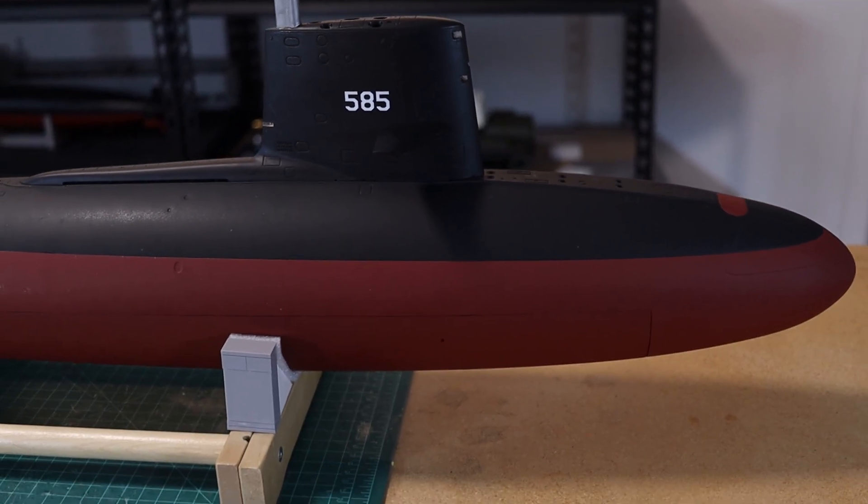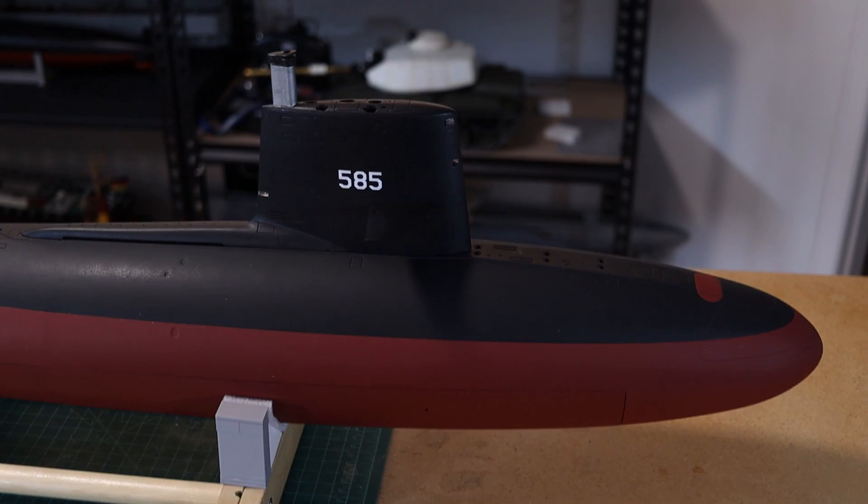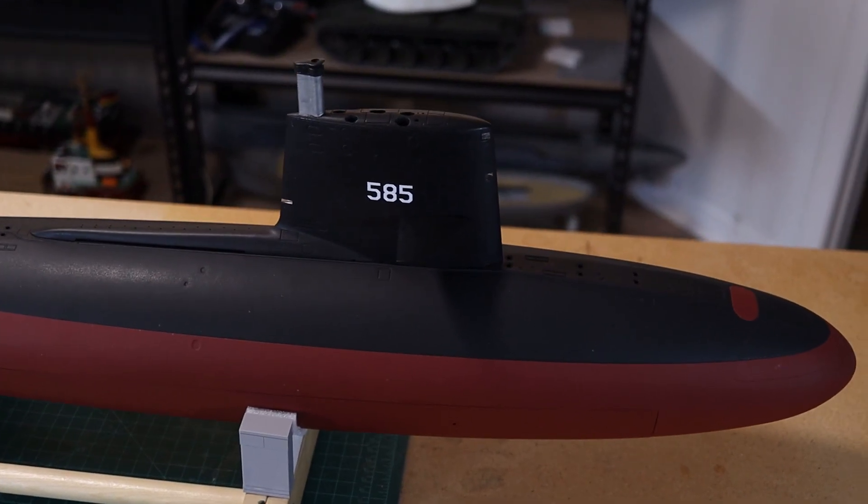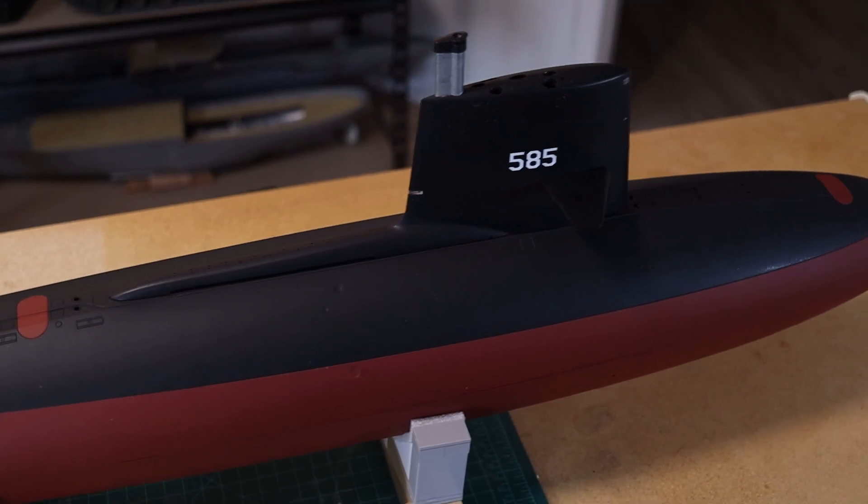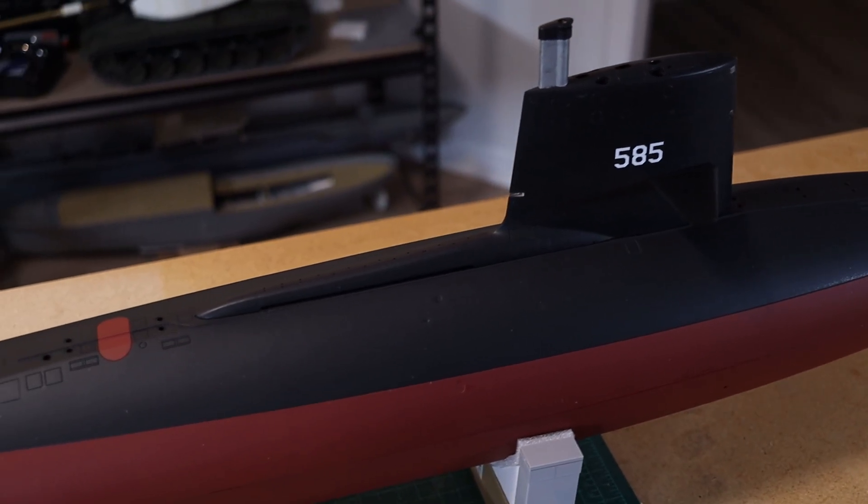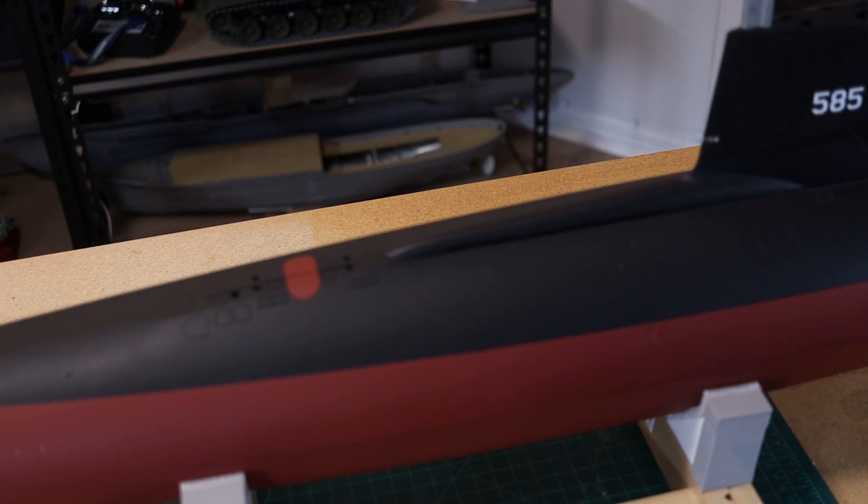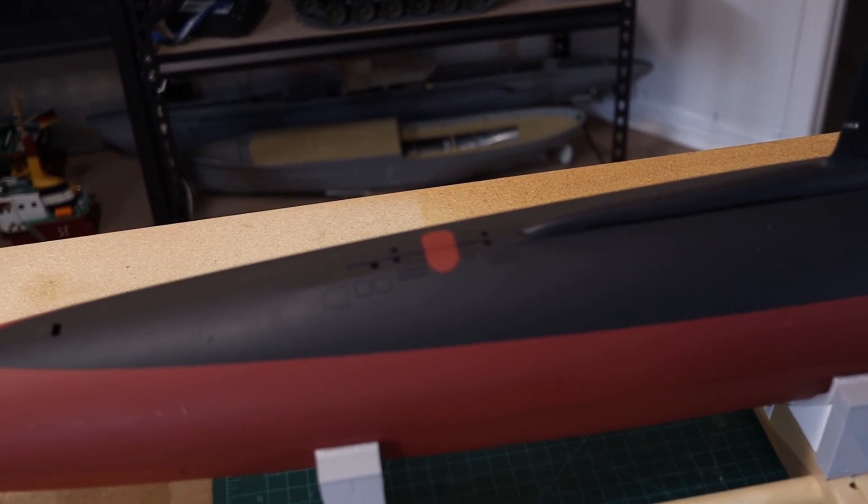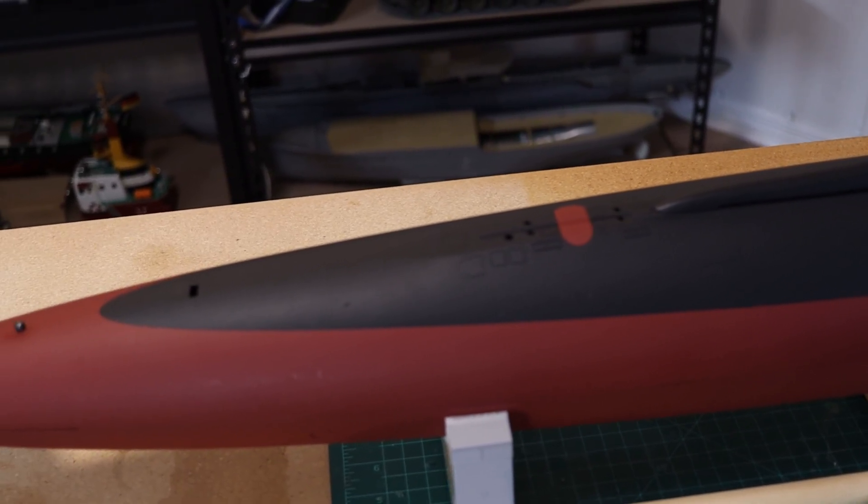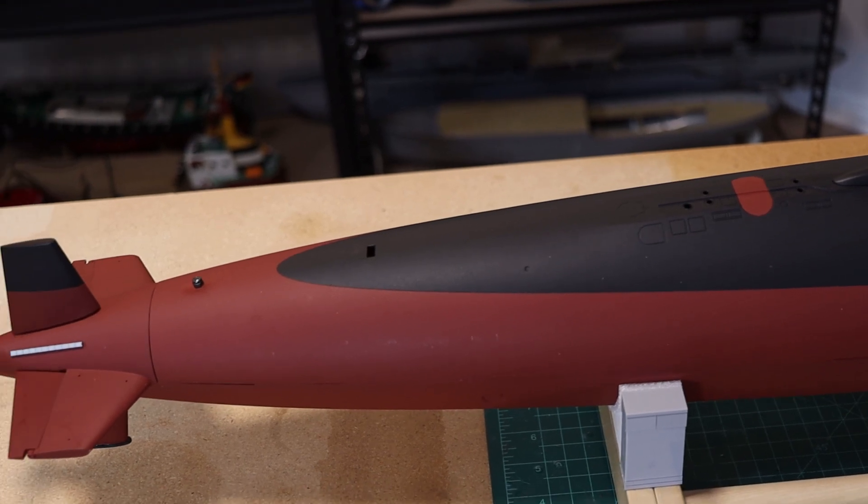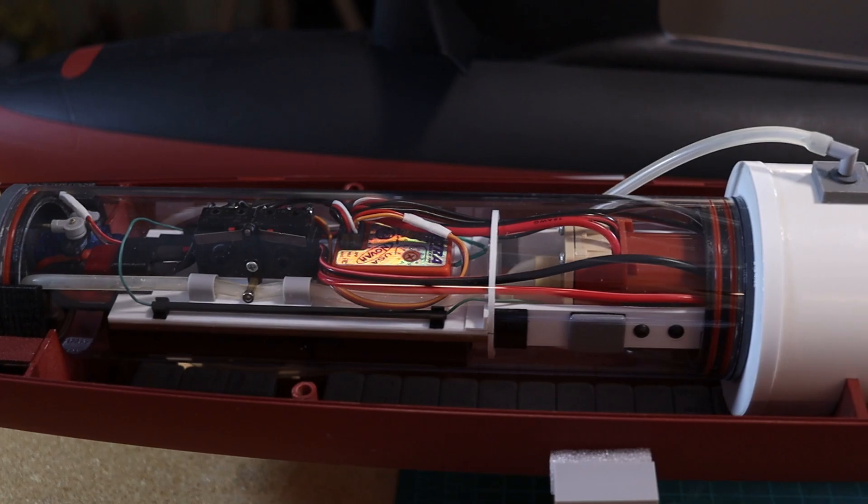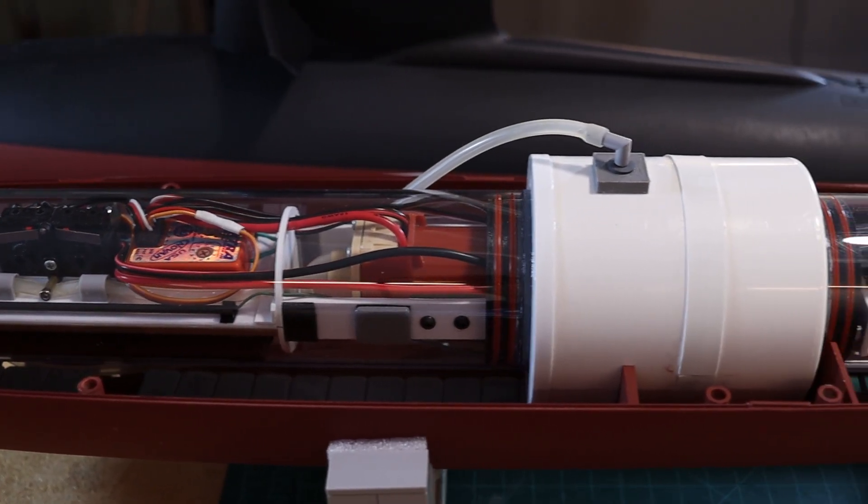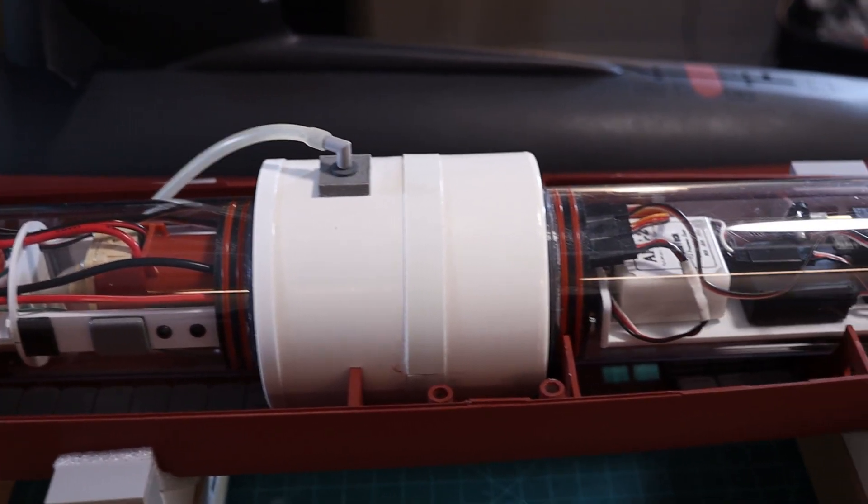It has a massive conning tower or sail as you can see there, which gives it a very unique looking profile. At the time of making this video I believe this kit you can still buy it on sites like eBay. I'm not sure if it's still in production, but within the RC submarine community it's quite a common kit that you see being converted into RC.